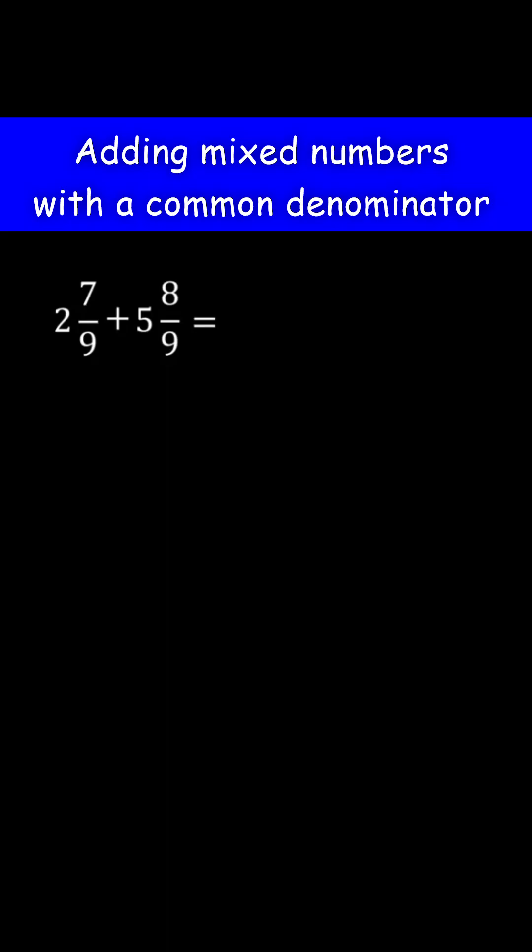To add mixed numbers with a common denominator, first expand the mixed numbers. 2 and 7 over 9 is the same as 2 plus 7 over 9. 5 and 8 over 9 is the same as 5 plus 8 over 9.